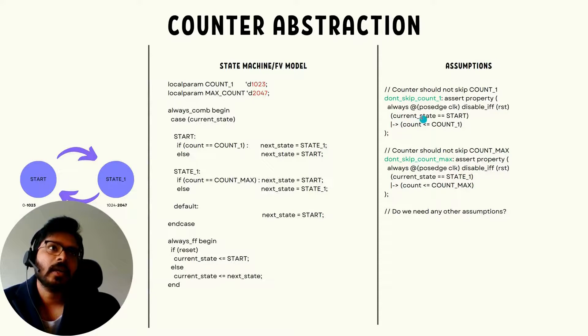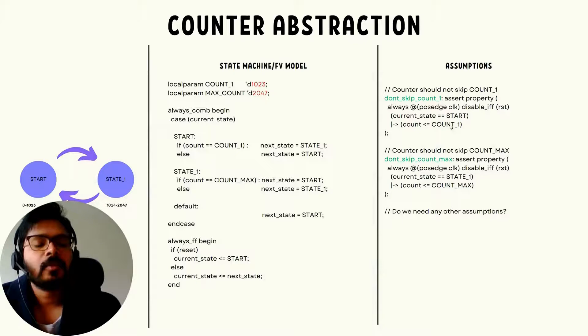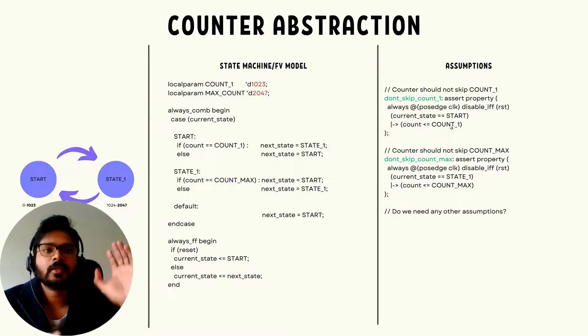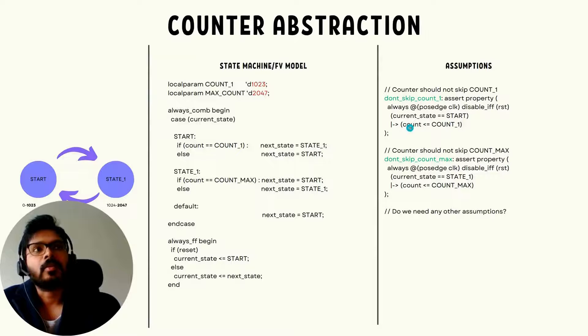This will ensure that while the FSM abstraction is in the state start, it will never miss the value count_one. It can take any values from zero to 1023, which is count_one, but it cannot skip count_one. Since the formal verification tools usually give the shortest possible counter examples, the counter value has an option to jump directly to the value of 1023, which is technically what we want. So then once it reaches count_one, it can go to state one.